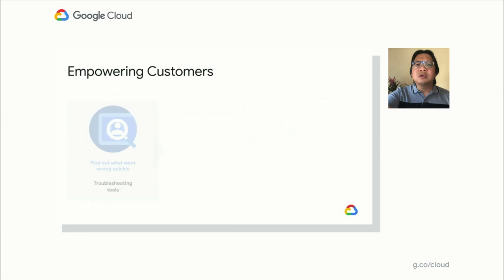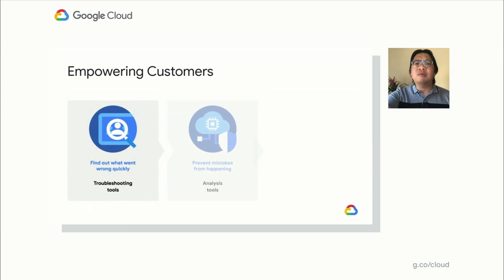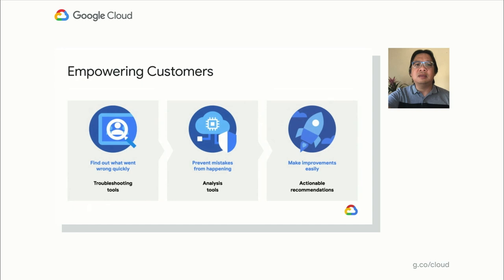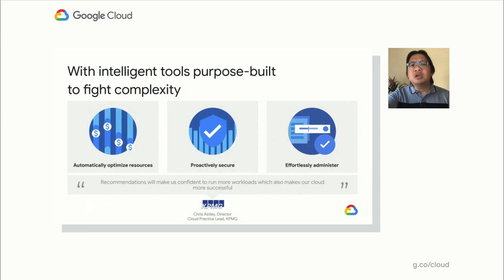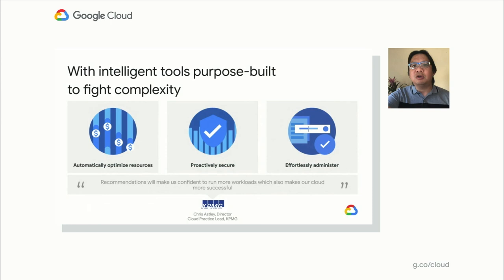First, you want to find out what went wrong quickly so you can take action right away. Second, you want to prevent mistakes from happening altogether. And third, you want to improve your cloud easily. By doing this, we can deliver on three big things for our customers. First, we're going to give you more ways to understand how to optimize your resources and let you automate that. Second, we're going to help you proactively secure your cloud by alerting you to things that need fixing before they become a bigger issue. And third, all of this aims to make your lives easier by reducing the time and toil that troubleshooting, analyzing, configuring, and administering your cloud usually takes.